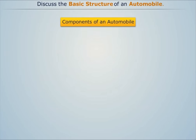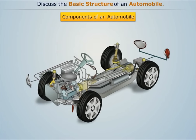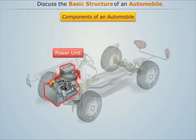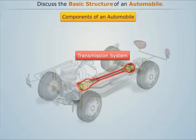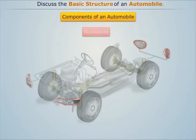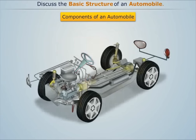An automobile is made up of hundreds of different parts which can be broadly categorized into six components: basic structure, power unit, transmission system, auxiliaries, controls, and superstructure.